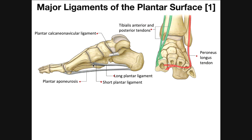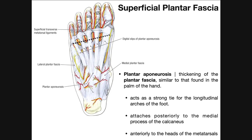Before we get into all those individual muscles, we need to understand that there's a layer of plantar fascia that is superficial even to those muscles. We can call this layer zero. This is the superficial plantar fascia. There's a thickening of this plantar fascia, and the region that connects to the calcaneus posteriorly is called the plantar aponeurosis. The plantar aponeurosis is similar to the palmar aponeurosis if you've watched that playlist.